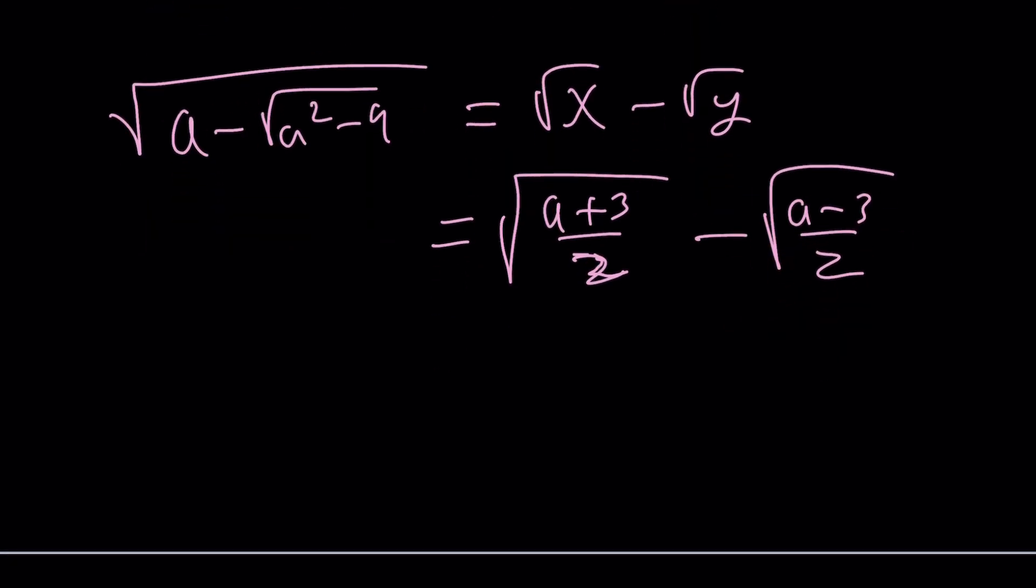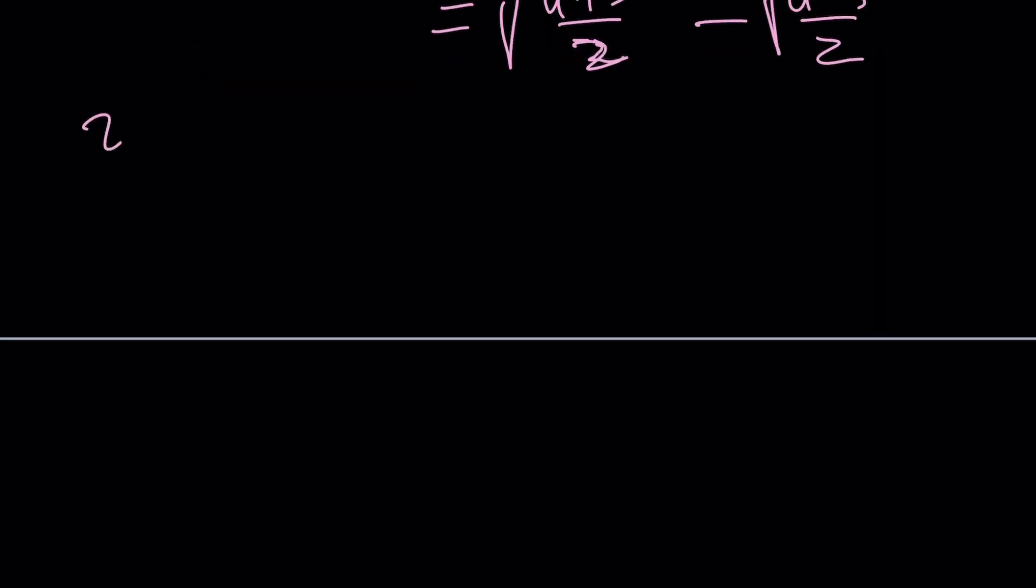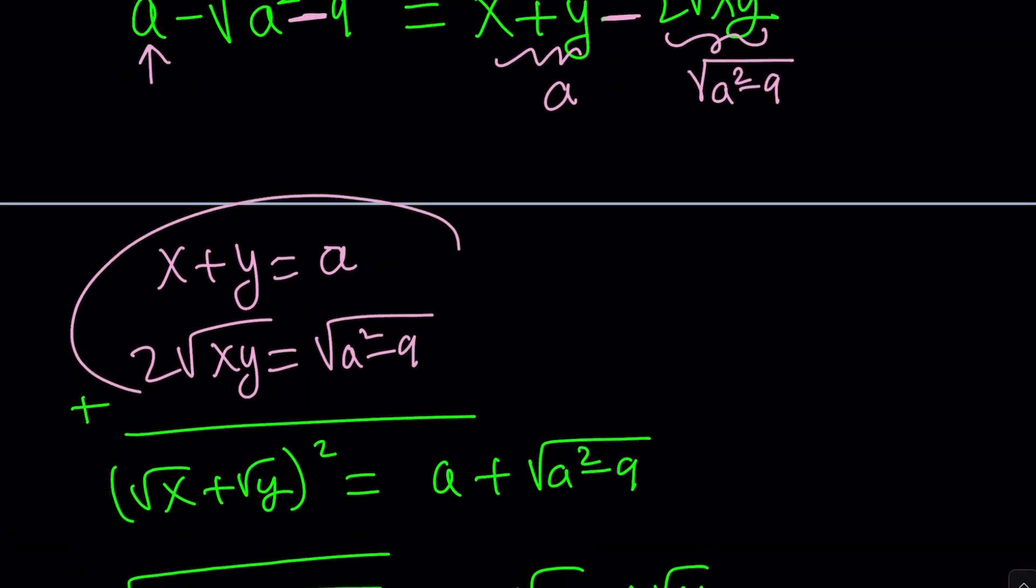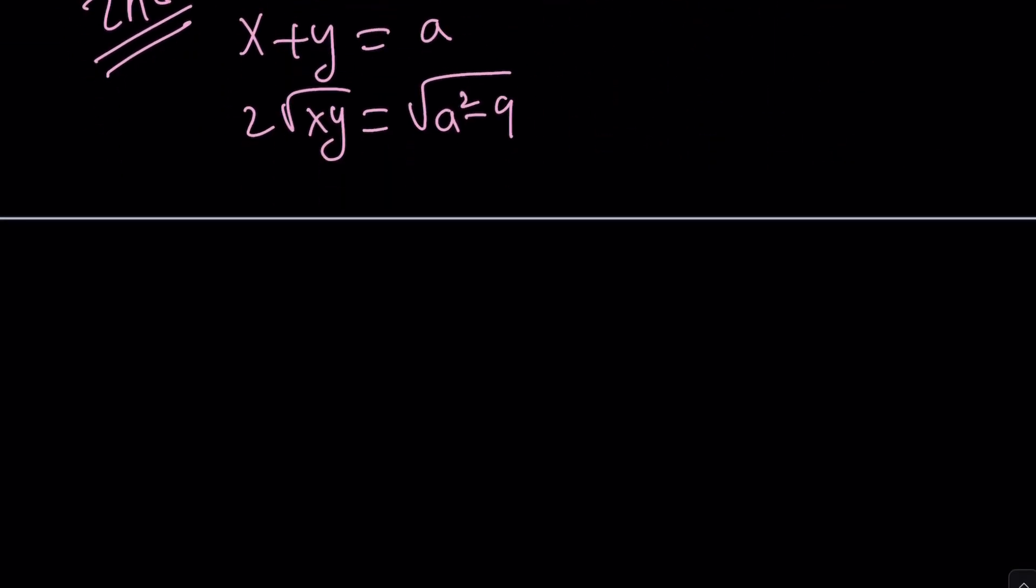So that should be the answer. But that's actually, this wasn't the intended first method. But maybe we can go ahead and do what I was planning to do for the first method with the second method. Let's get back to the same point. We had x plus y equals a and two root xy equals square root of a squared minus nine. That comes from setting rationals equal to rationals and irrationals to irrationals.